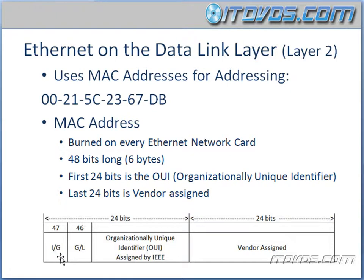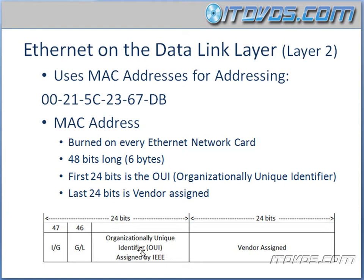Let's look at the first bit — I/G, which stands for Individual/Group. If it's a 0, it's going to be an actual Ethernet device. If it's a 1, that MAC address is either a broadcast or multicast MAC address. The second bit, G/L, stands for Global/Local. When it's a 0, it means the OUI — the first 24 bits — was assigned by the IEEE. If it's a 1, it means we basically assigned this OUI ourselves, without getting it from the IEEE.